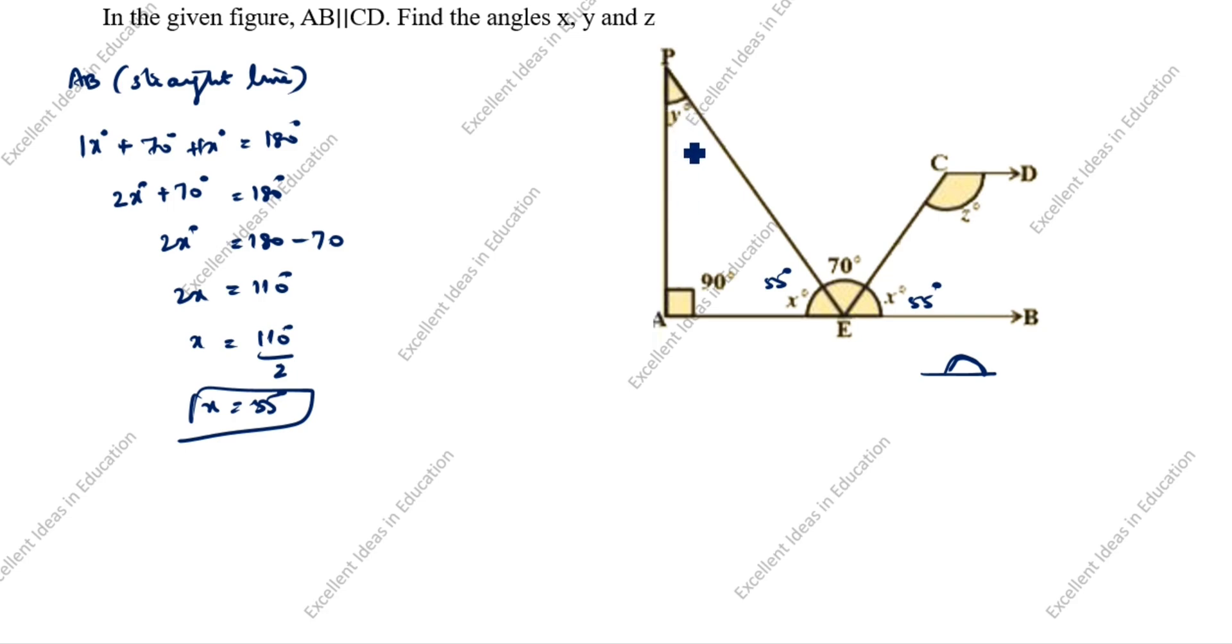Now we will find this y value. How will we find it? We will take triangle PAV. This is the right angle triangle. In a right angle triangle, the sum of all angles is 180 degrees. We need to find y degrees plus 90 degrees plus x degrees. We just calculated x is 55 degrees, equal to 180 degrees.